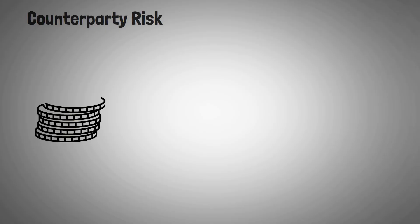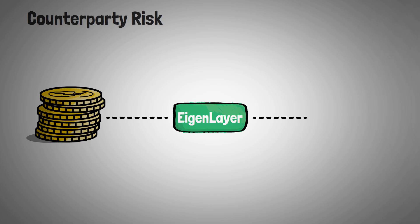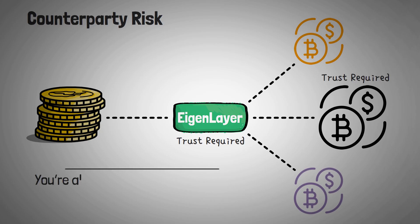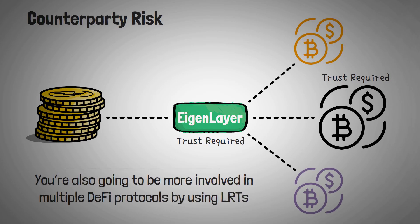Of course, this comes with another risk that we didn't mention earlier, and that's called counterparty risk. When restaking, you aren't only trusting one smart contract, the staking platform, but also the restaking smart contract. This means there are at least two points of potential failure rather than just one. You're also going to be more involved in multiple DeFi protocols by using LRTs, and the more you're using, the more risk there is.